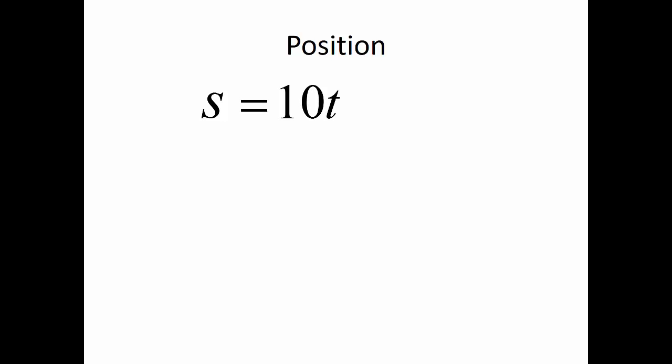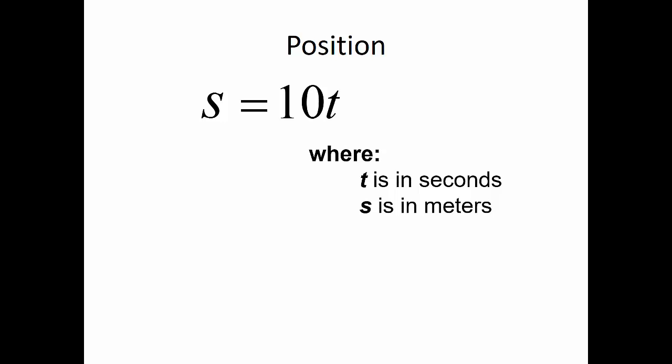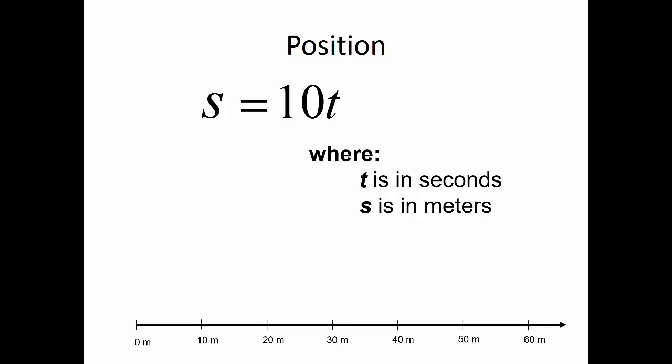Now let's talk about the different variables we deal with. First, position — we're going to represent position with the letter s. If I define position as a function of time and represent it as s = 10t, with time in seconds and position in meters, then at time zero I'm at position zero, at one second my position is 10 meters, at two seconds it's 20 meters, and so on.